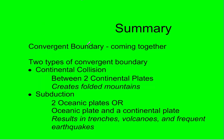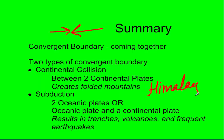In summary, convergent boundaries occur when two plates come together. We have two types: continental collision, between two continental plates, which creates folded mountains like the Himalaya Mountains where Mount Everest is located; and subduction, which can occur between two oceanic plates or an oceanic plate and a continental plate. The oceanic plate is more dense and sinks beneath the continental plate, resulting in trenches, volcanoes, and frequent earthquakes.